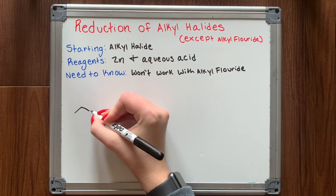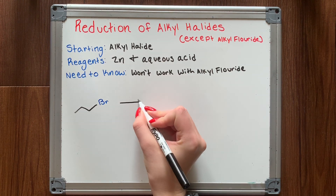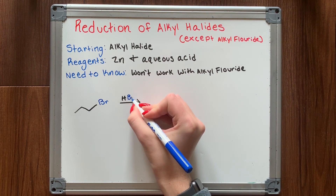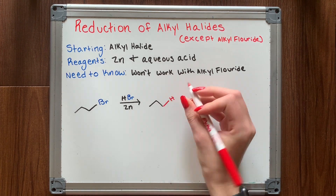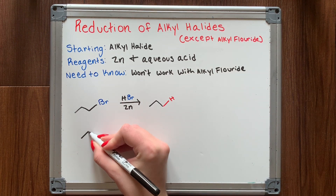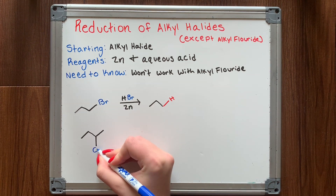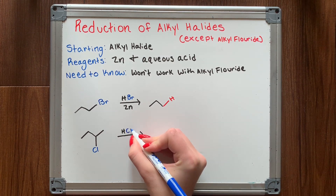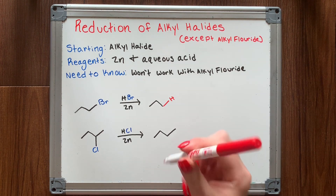Reduction of alkyl halides — except alkyl fluorides. Fluorine can behave unpredictably, so in organic chemistry it is almost always a better bet to write bromine or chlorine when working with a halide, as they are the ones that don't break the rules. Your starting material is an alkyl bromide or alkyl chloride, and you treat it with zinc and an aqueous acid to produce an alkane, as shown in the examples.